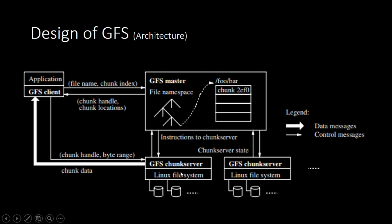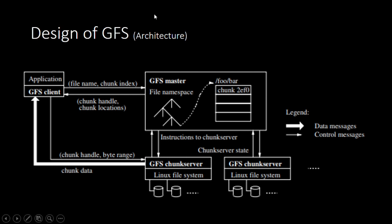Here's an example of what a read looks like using this paradigm. The client translates the file name and byte offset into a chunk index within the file, then sends the master a request with that information. The master does a bit of computation and replies with the chunk handle and the locations of the replicas created using the snapshot function. The client caches that information and sends a request to one of the replicas in the chunk server with the chunk handle and byte range within that chunk. Once that information is cached by the client, any further reads or writes of that chunk require no further interaction with the master.